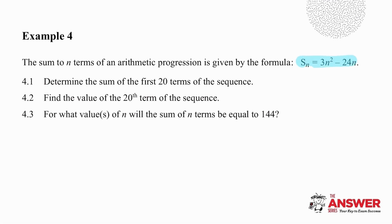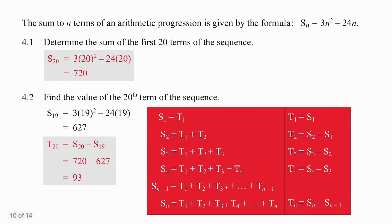Example 4 is amazing. They are actually giving us the formula for the sum of N terms. Makes you wonder what they could possibly be asking. The first question simply asks us to work out the sum of the first 20 terms. Pause the video and try as many of these questions as you can on your own, and then I will go through them with you. The first question, if you didn't overcomplicate it, you simply needed to substitute 20 into the formula for N and work out that the sum of 20 terms is 720.